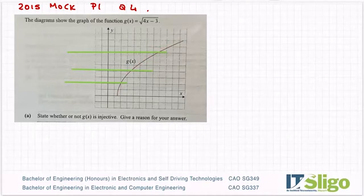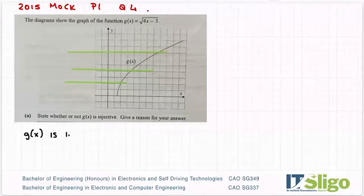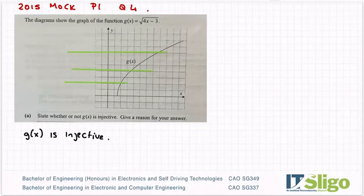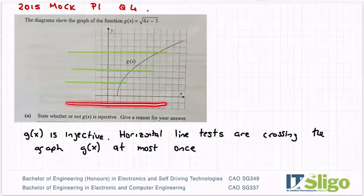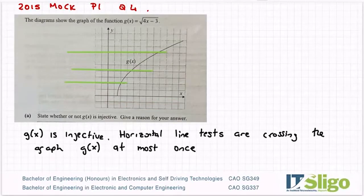My conclusion then is g of x is injective, horizontal line test cuts at most once. If I'd done one down here it didn't cross the graph at all so it doesn't mean it fails, because it's at most once. So that is an injective function.